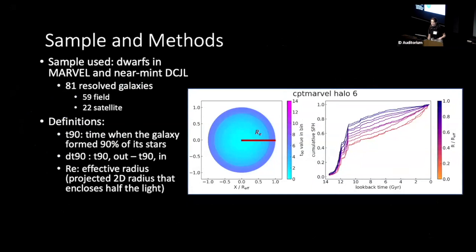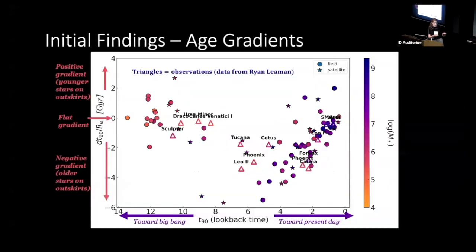The sample I used to study this question are the Marvel and Near Mint DCJL. There are 81 resolved galaxies I'm looking at. I split up each galaxy into radial bins, calculated the T90 value in each bin, and then subtracted inside from outside to get the age gradient.